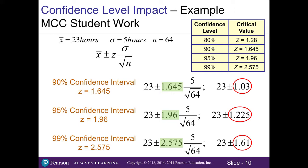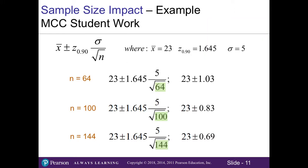But what if we modified our sample size? Here we are keeping our sample mean of 23 hours the same and our 90% confidence level, which is the critical Z value of 1.645, but we're changing our sample size from 64 to 100 and 144. We can see now that our margin of error decreases as our sample size gets bigger. This ties back to when we learned about the central limit theorem that the bigger the sample, the closer we get to our true population mean and our curve gets more narrow.